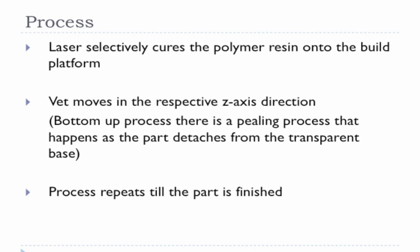Now let's move on to the process of SLA. I didn't state in this slide, however, like all the other 3D printers, you need a 3D model in the STL file to be sliced into cross sections and then input to the machine. After that is done, the build plate in the SLA process is submerged into a vat of resin, and then the laser selectively cures the polymer resin onto the build platform. Adhesion of the first layer to the build platform is very important. After that cross section is done, the vat moves in the respective Z axis direction, whether it is upwards or downwards.